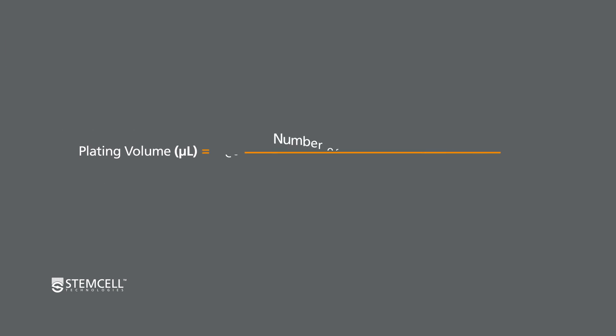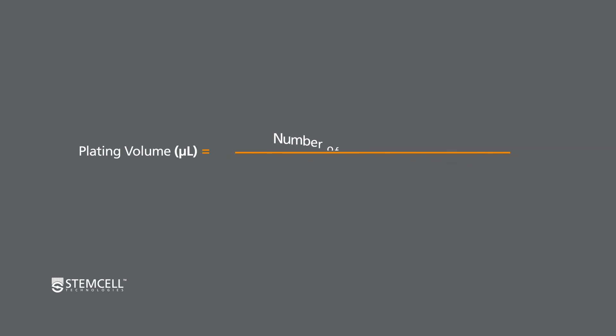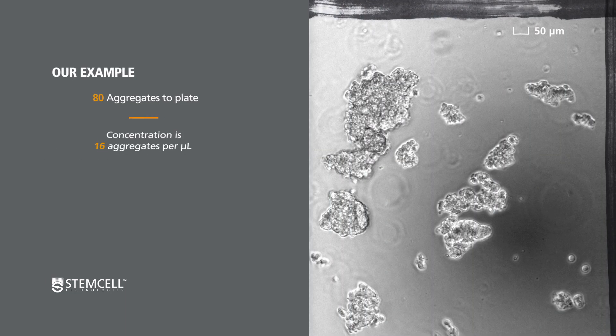Calculate the volume of cell aggregate mixture to plate for each condition in your experiment by dividing the target number of aggregates to plate by the concentration of aggregates. In our example, we have to plate 5 microliters per well.